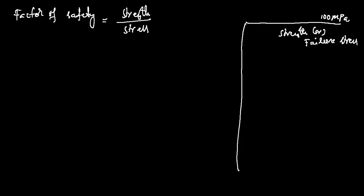For example, the strength of this material is 100 megapascals. So what we do is, we operate at a stress of 50 megapascals, by keeping a factor of safety of 2. Strength is 100 megapascals, and stress at which I am operating is 50 megapascals, thereby the factor of safety is 2.